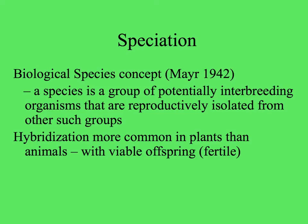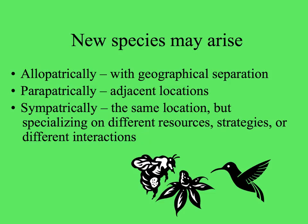What is a plant species? It's a little tricky with plants. Ernst Mayr first described a biological species as a group of potentially interbreeding organisms reproductively isolated from other such groups. But in plants we see a lot more hybridization producing viable offspring. New species can arise allopatrically — in different places with geographical separation — parapatrically when two sites are adjacent, or sympatrically in the same location but with specialization on different resources, strategies, or pollination interactions.